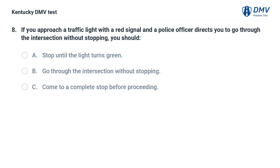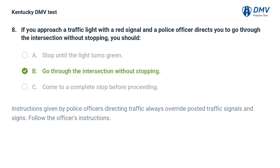If you approach a traffic light with a red signal and a police officer directs you to go through the intersection without stopping, you should: A. Stop until the light turns green. B. Go through the intersection without stopping. C. Come to a complete stop before proceeding. The correct answer is B, go through the intersection without stopping. Instructions given by police officers directing traffic always override posted traffic signals and signs. Follow the officer's instructions.